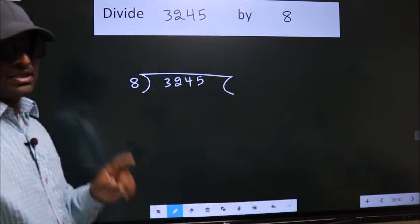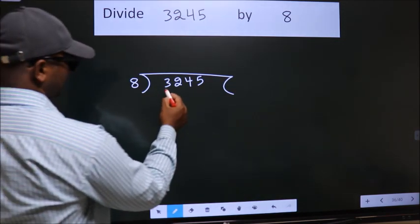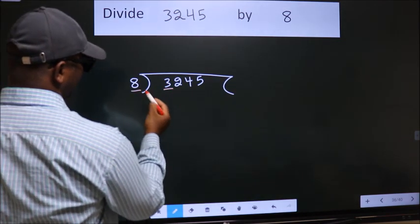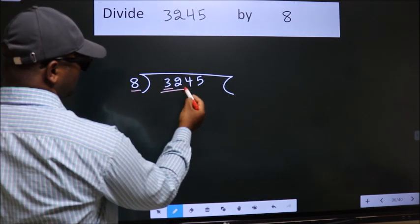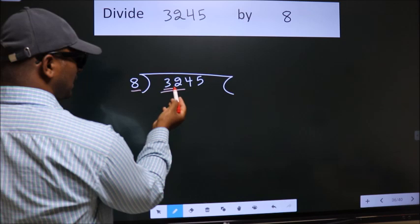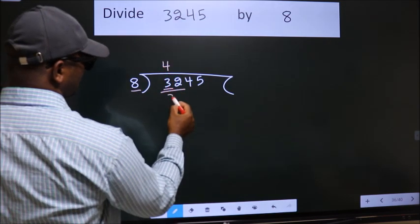This is your step 1. Next, here we have 3, here 8. 3 is smaller than 8, so we should take two numbers: 32. When do we get 32 in the 8 table? 8 fours, 32.